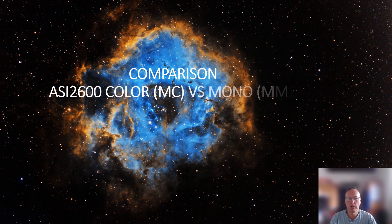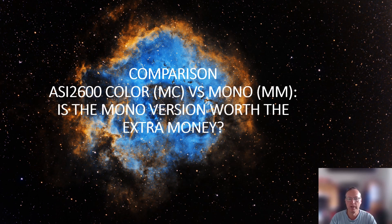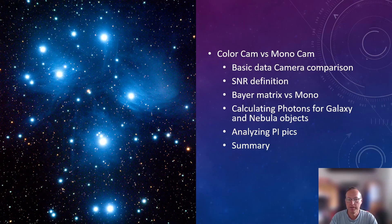Welcome to our comparison: color camera versus mono camera. I will use MC for color and MM for mono. Our question is: is the mono version worth the extra money, or should you spend it on telescopes or somewhere else? We'll cover basic data, a camera comparison, signal-to-noise ratio, Bayer versus mono pixels, photon calculations for a galaxy and a nebula, picture analysis, and a summary.